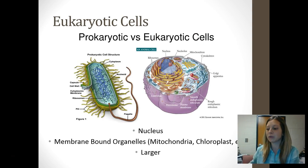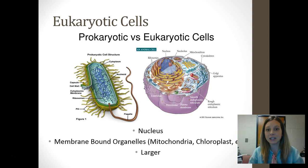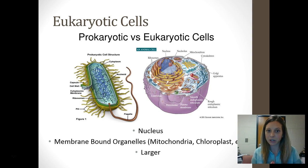We're going to start by doing a quick review of prokaryotic versus eukaryotic cells. This should not be new information — you should know this already. Prokaryotic cells do not have a nucleus, do not have membrane-bound organelles, are much simpler, and much smaller. The only type of prokaryotic organism is bacteria. Everything else has eukaryotic cells.